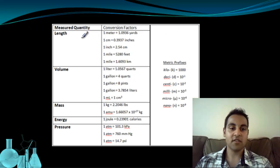This chart gives us several different quantities: length, volume, mass, energy, and pressure, and then gives us a bunch of conversion factors in the next column. Conversion factors are basically identities. It tells what one unit is in terms of another unit. So you can see for length, it says one meter is 1.0936 yards, and so on and so forth. On the right side of this chart, it says metric prefixes. This is a handy chart if you don't really remember what your metric prefixes are and what they mean.